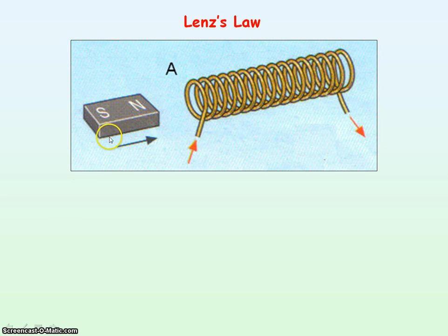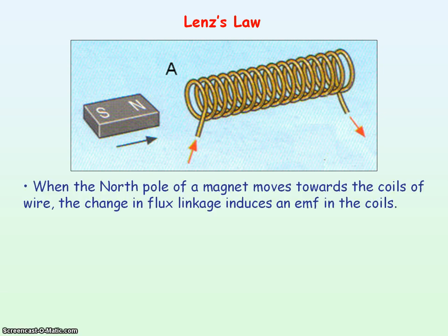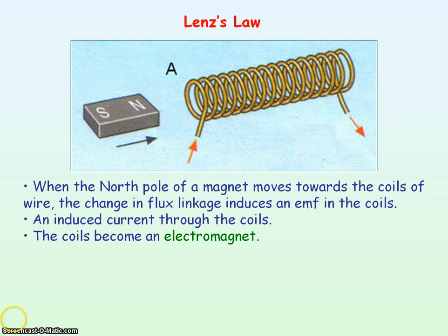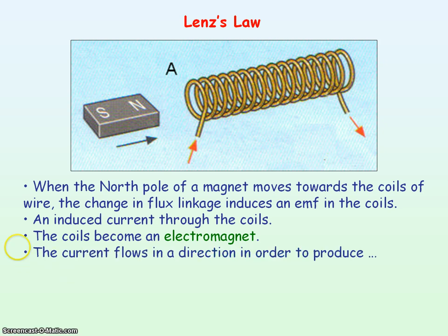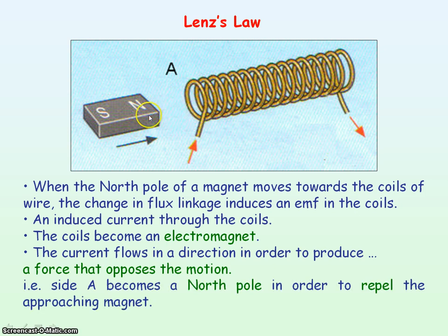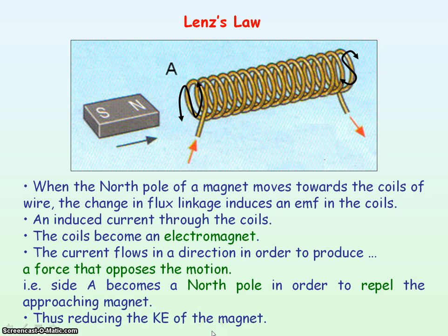We now consider a magnet whose north pole is approaching a coil of wire. There will be a change in magnetic flux linkage through the coils that will induce an EMF. The induced current through the coils will make the coils become an electromagnet, and the current will flow in a direction to produce a force that opposes the motion of the magnet. That means it will flow in a direction to set up a north pole on side A in order to repel the magnet, reducing the kinetic energy of the magnet to produce the electrical energy — the induced EMF.